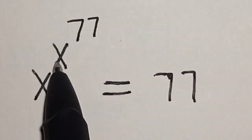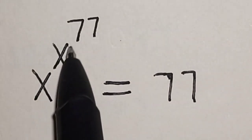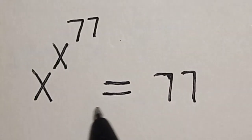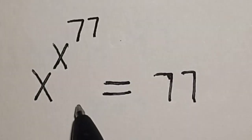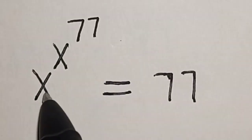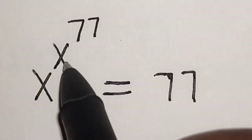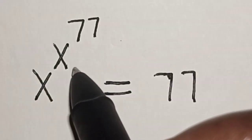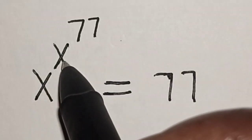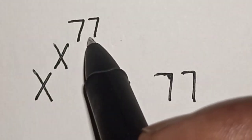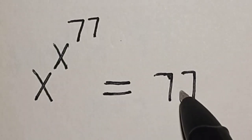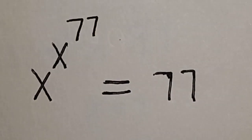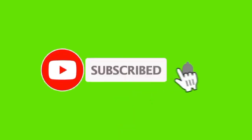x raised to power x raised to power 77 is equal to 77. Hi everyone, welcome to my class. In this class we want to find the value of x from this given equation: x raised to power x raised to power 77 is equal to 77.